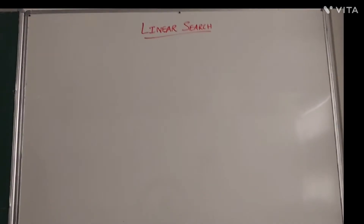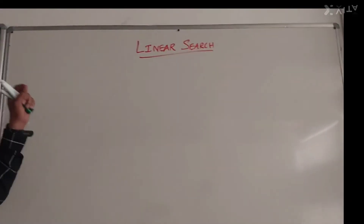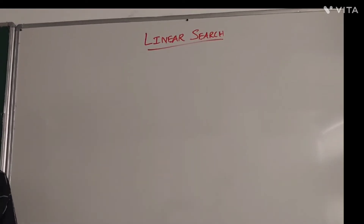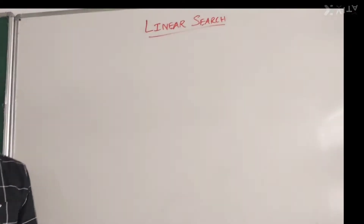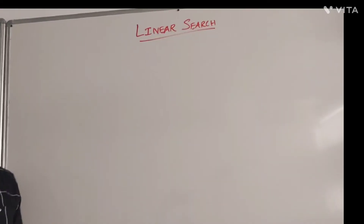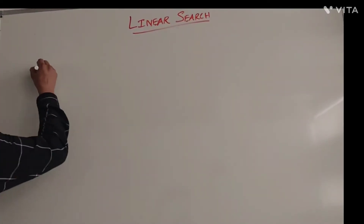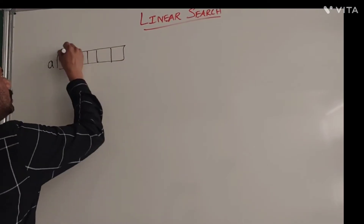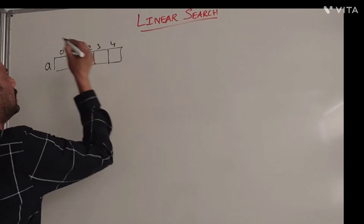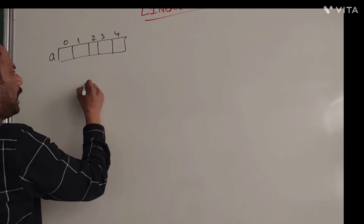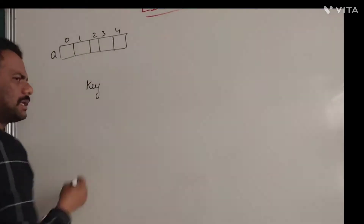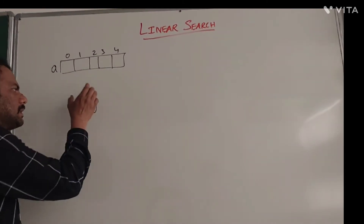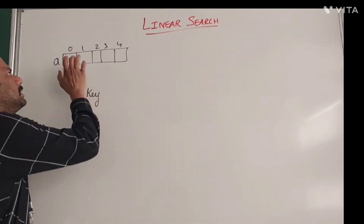In this video I am going to explain what linear search means. Linear search is also called sequential search. Given some set of elements — an array of elements with indices zero, one, two — and given one key element, which is the important number, we need to find whether this number is present in the given set of elements or not.